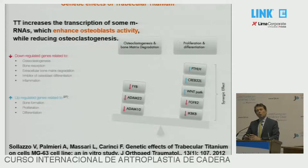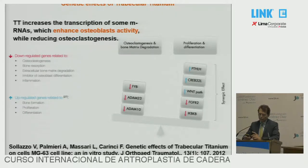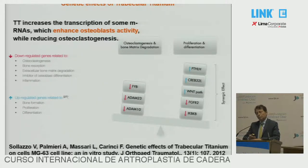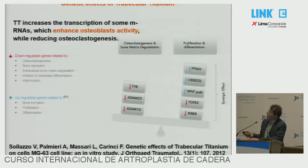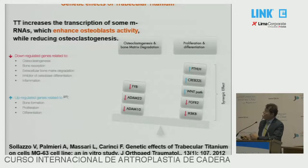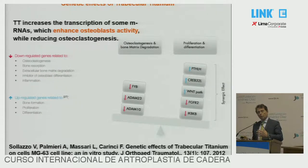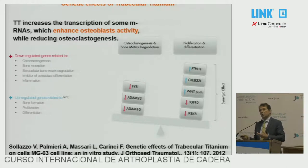That way, it is able to reduce the current problems of detachment and circulation of free particles. Regarding the biological properties of trabecular titanium, this is a paper from the Italian group based in Ferrara. They demonstrated that all genes dealing with osteogenic production are upregulated, while all genes dealing with osteoclastic reaction are downregulated. So if you cultivate cells on this material, the cells are stimulated to grow and produce bone.